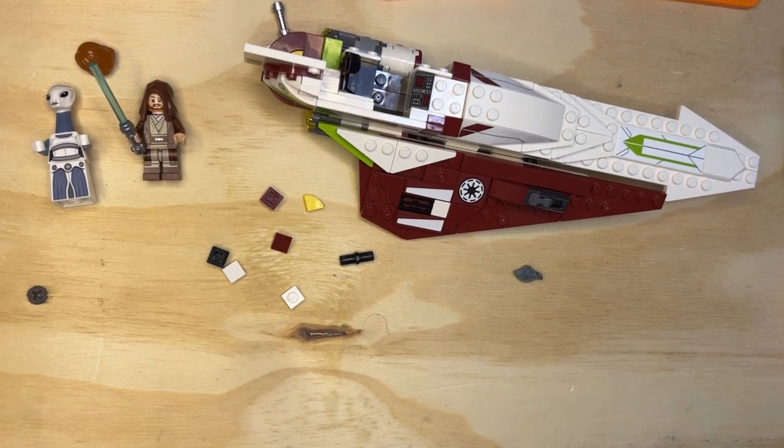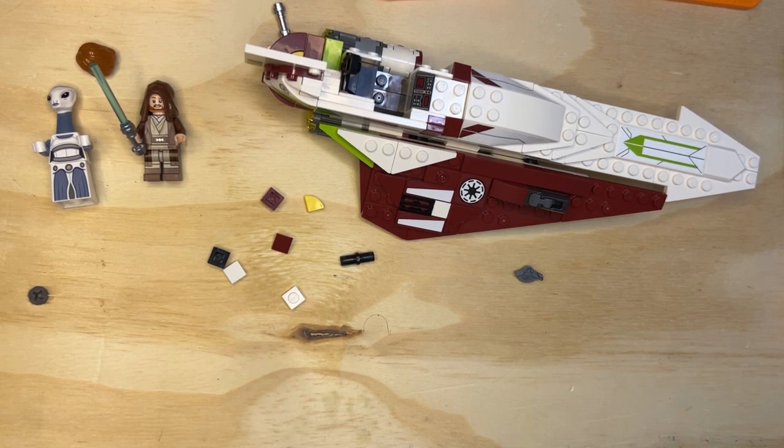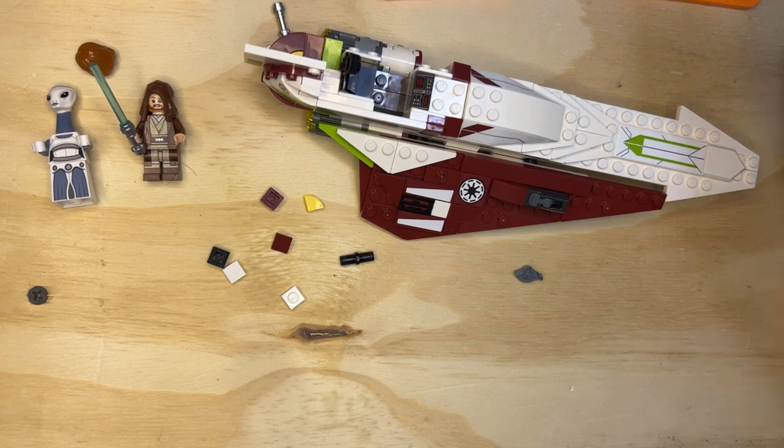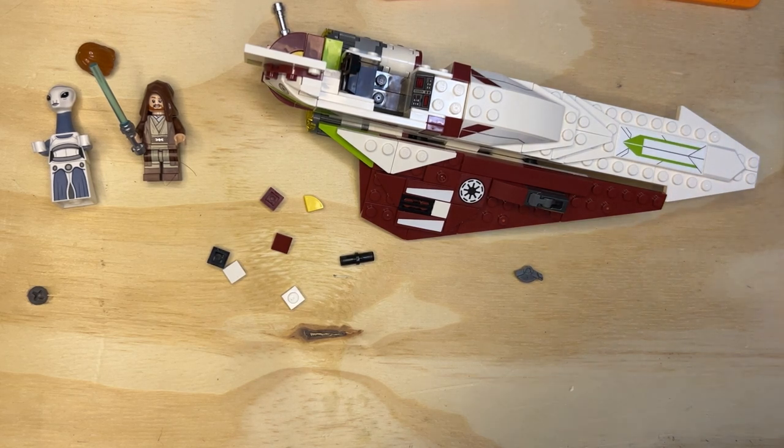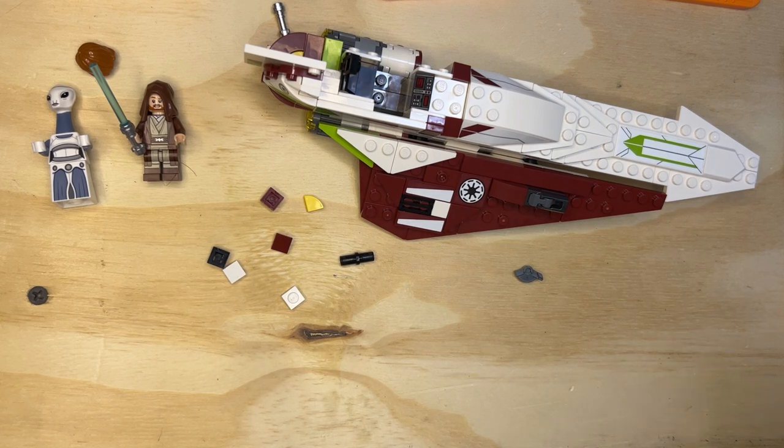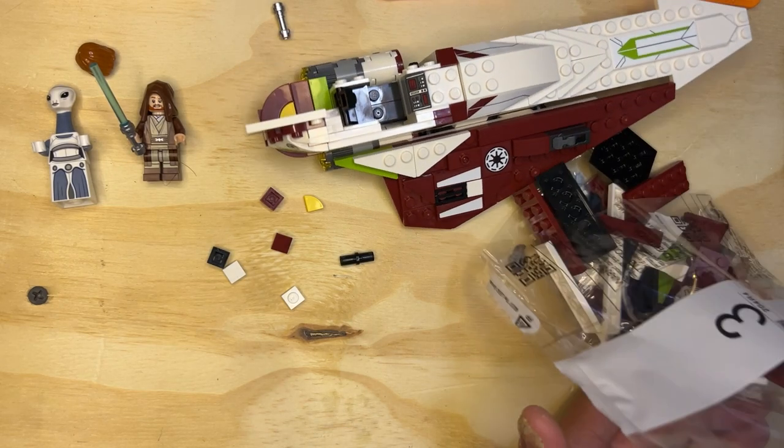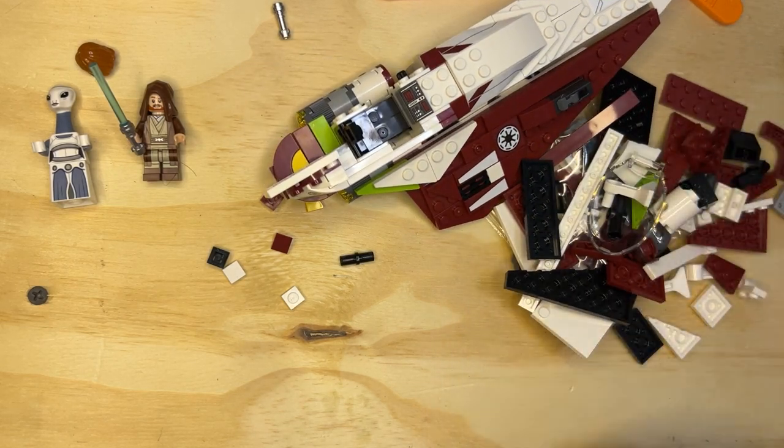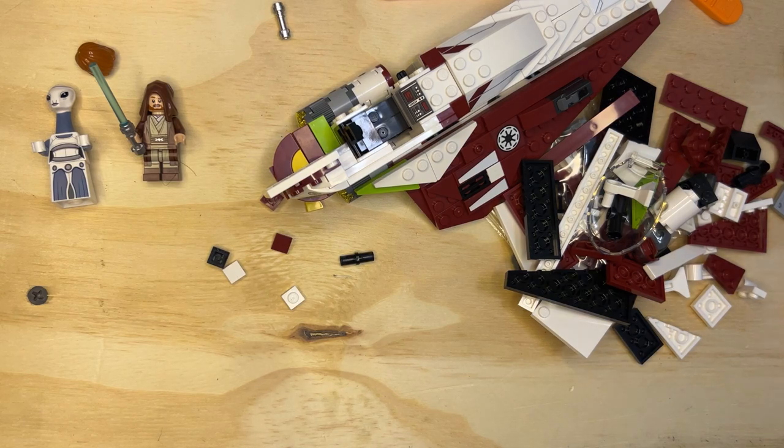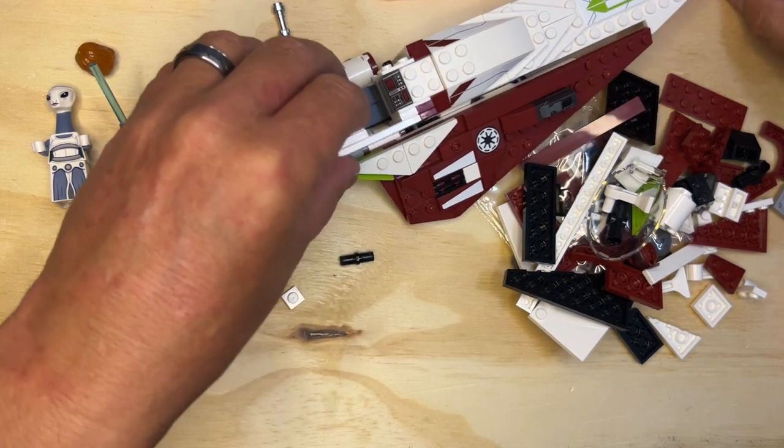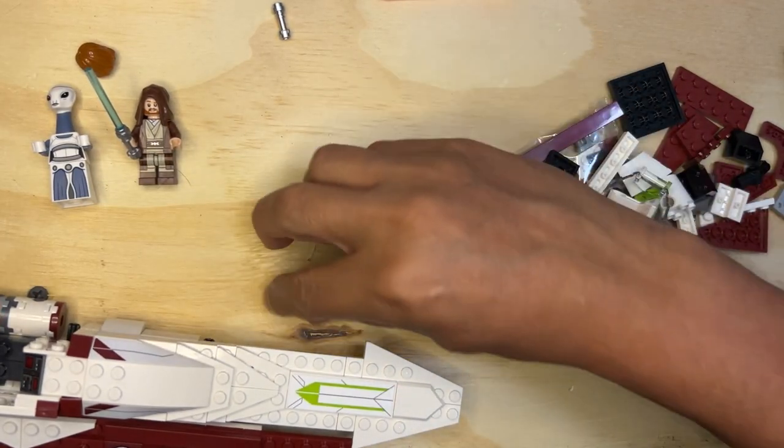Alright, so we're back LEGO fanatics, let's keep going. We're gonna go on to bag three. Obviously going to build the other wing on the other side of this. Let me spill these parts out. Let's move this a little bit and I'll put it over here for right now.